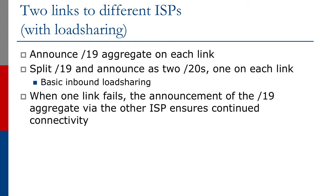What we're going to do now is take the /19 and divide it into two pieces - the same principle as we saw earlier. We're going to announce one /20 on the link to AS110, and we're going to announce the second /20 on the link to AS120. Should either link fail, the /19 through the other link provides the backup. All traffic for the first /20 will come in through AS110, and all traffic for the second /20 will come in through AS120.